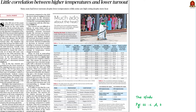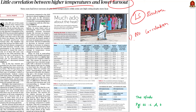This article discusses voter turnout in the recent phase of Lok Sabha elections in India, comparing it with previous years. Despite speculation that higher temperatures might lead to lower voter turnout, the data shows little to no correlation between temperature increase and voting rates. In some parts, voter turnout increased even with higher temperatures, while in others it decreased despite cooler temperatures. Overall, factors other than temperature seem to influence whether people choose to vote, and further analysis is needed.